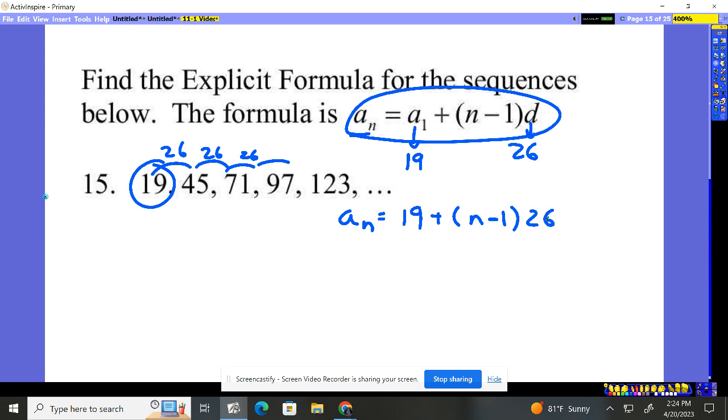We need to clean this up by distributing the 26 through. So I have 19 plus 26n minus 26.